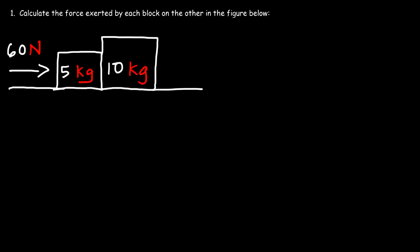In this video, we're going to talk about how to calculate the force exerted by each block on the other — basically the contact force between the two blocks. As we push the two blocks to the right, the 5 kg block exerts a contact force on the 10 kg block, and the 10 kg block exerts an equal but opposite contact force on the 5 kg block. This is in agreement with Newton's third law of motion: for every action force, there is an equal but opposite reaction force.